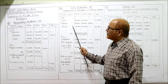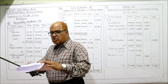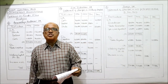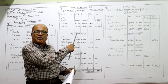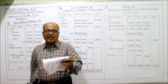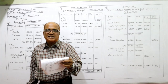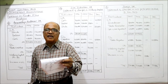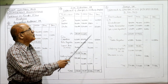Now problem number 7: find out the changes in working capital for JVK Industries. We prepare a statement of changes in working capital exactly the same way. Last year is 1996, current year is 1997. Now we have to identify which items are current assets.